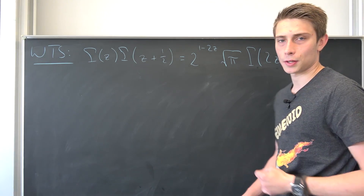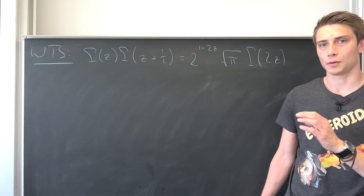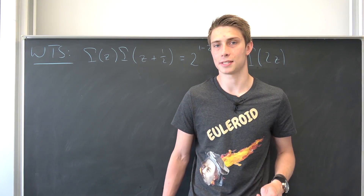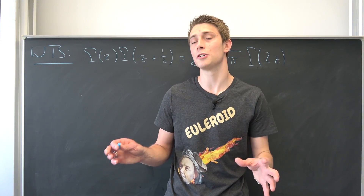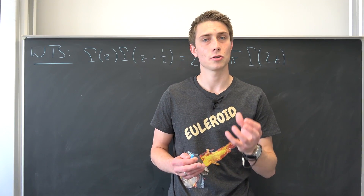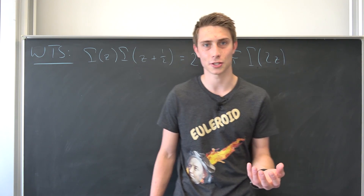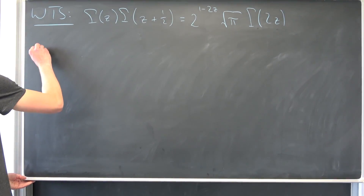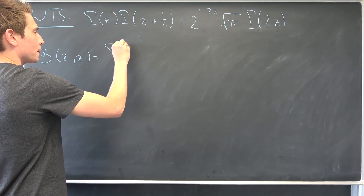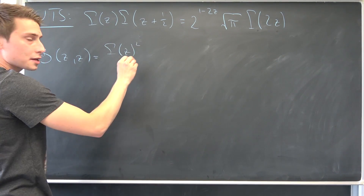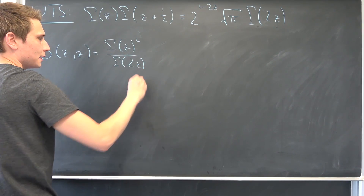We are going to have a factor of Gamma of 2z right here. What is Gamma of 2z? Well, it's nothing but Gamma of z plus z. We have introduced a really useful function that allows us to express it using the addition of arguments of the Gamma function — it's the beta function. So if we take a look at the beta function of z comma z, it's going to provide us with Gamma of z squared over Gamma of 2z.